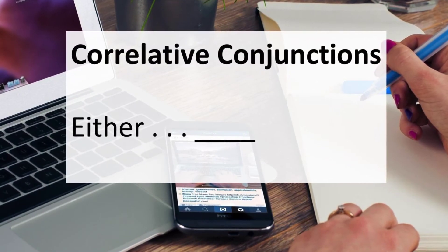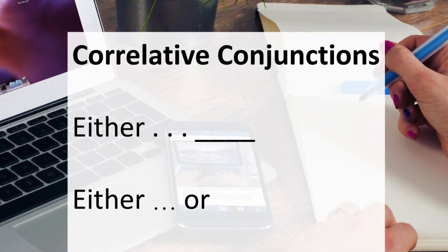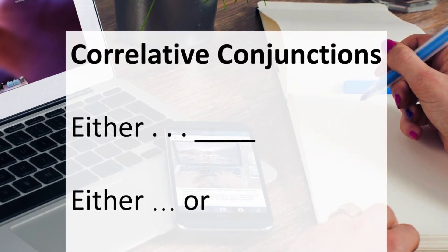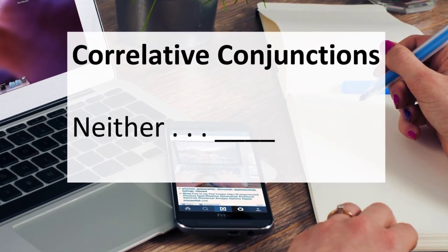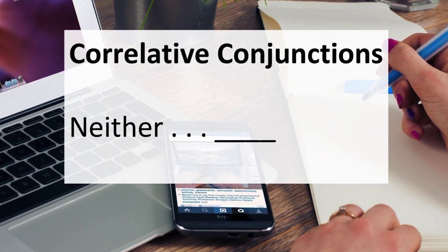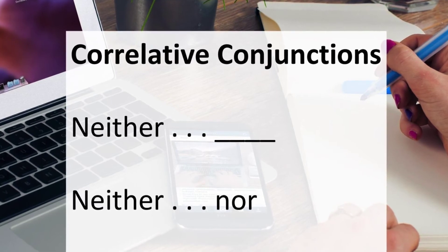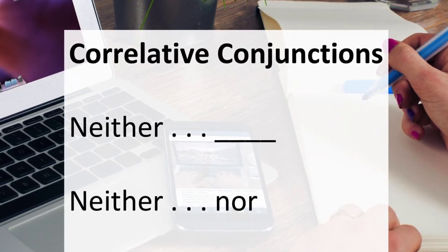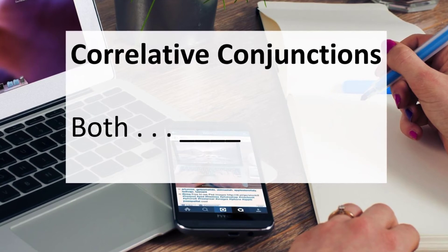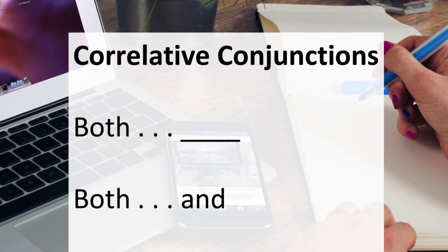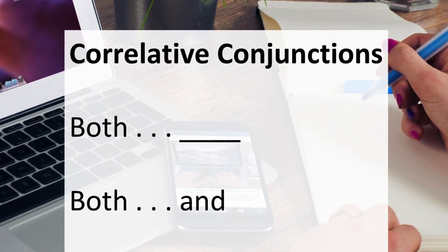If you're using the word either in a sentence, you'd also use or in the second part of the sentence. If you're using neither, you'd also use nor in that same sentence. If you're using the word both, you'll probably also be using the word and later in that same sentence.